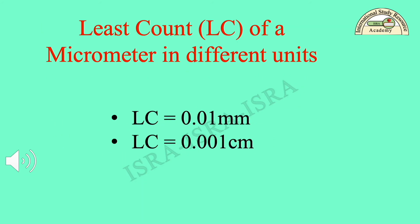Least count LC of micrometer in different units: you have calculated the least count of this micrometer screw gauge in two units, mm and cm. The first one: LC is equal to 0.01 mm. The second one: LC is equal to 0.001 cm.